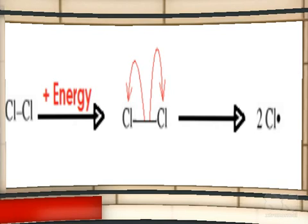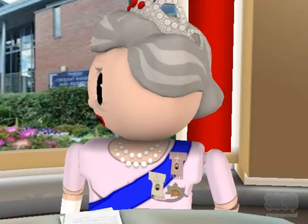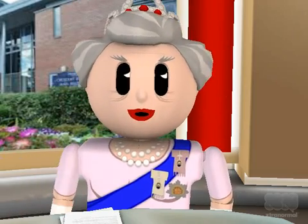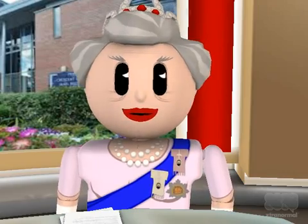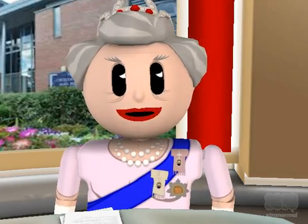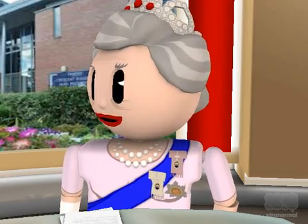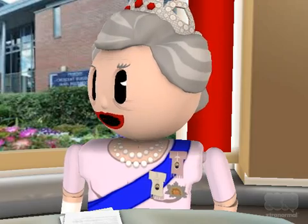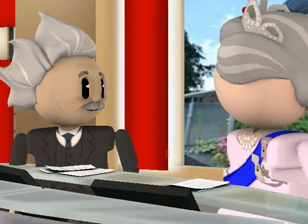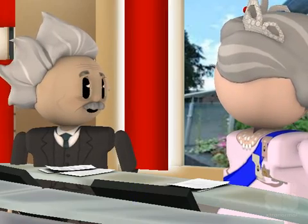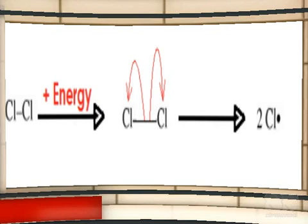It is likely that the bond has absorbed a photon of just the right wavelength to excite its electrons. This causes the two chlorine atoms to pull apart so that eventually the bond breaks. Each chlorine atom gets an equal share of the electron pair in the bond.